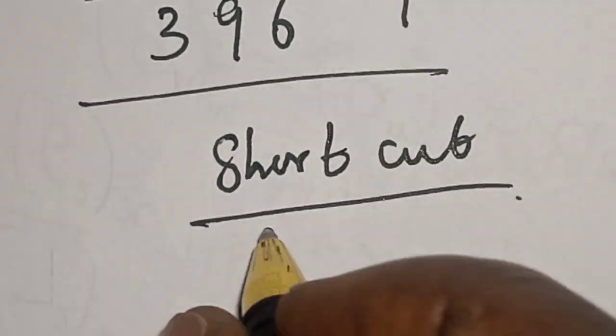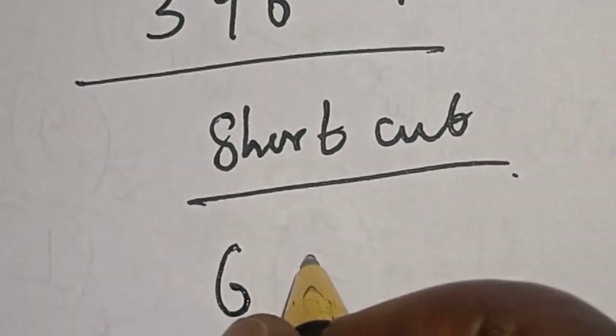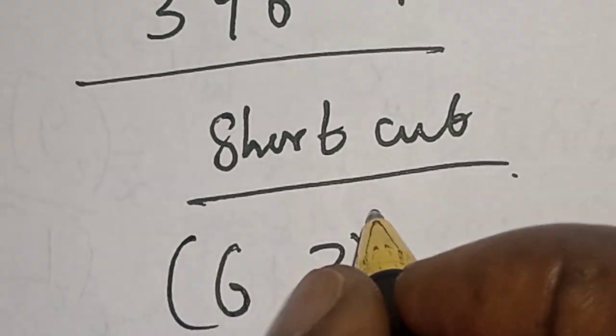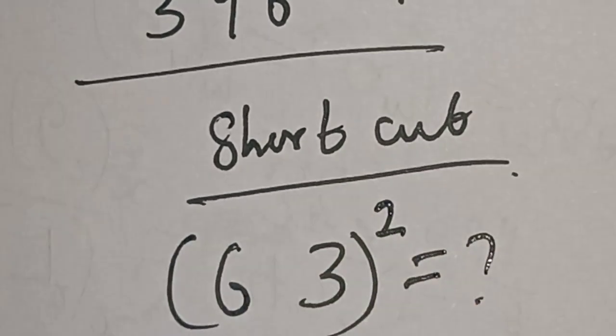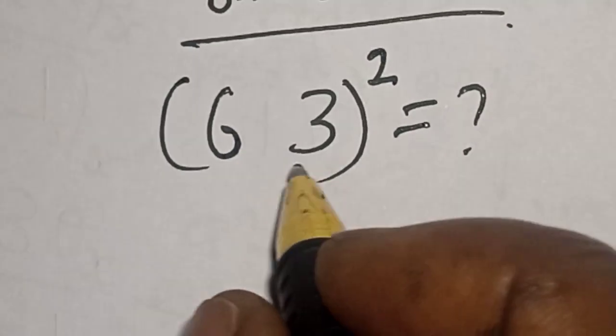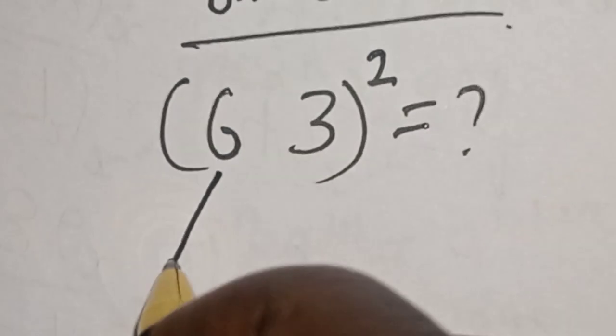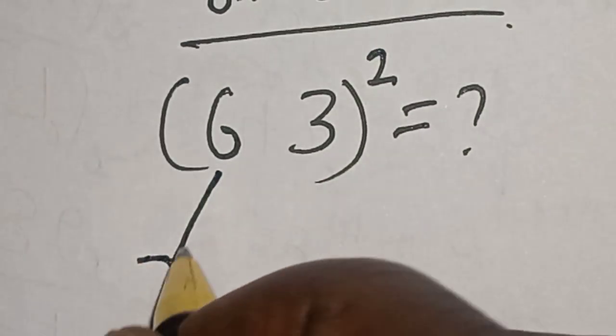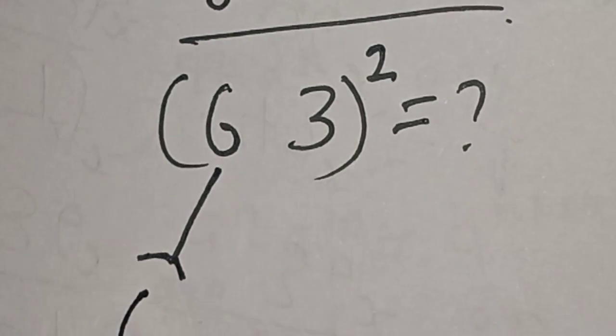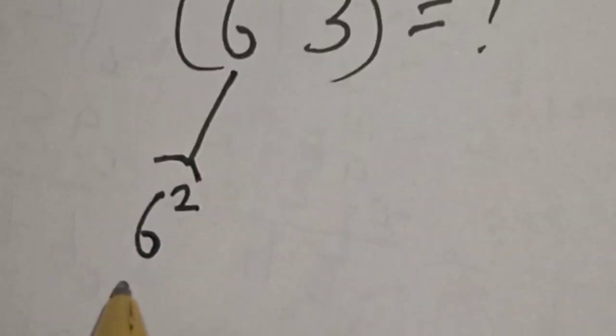Our shortcut is that 63 squared is equal to what? We don't know. Now 63, here is 6. Let's see, 6 squared. This is 6 squared. Then this is equal to 36.